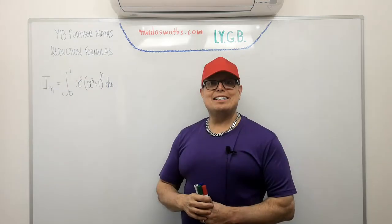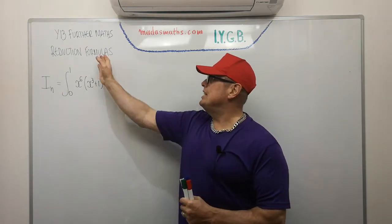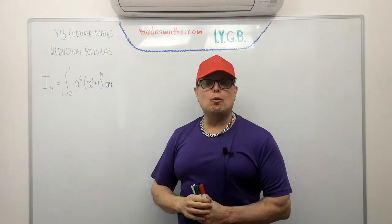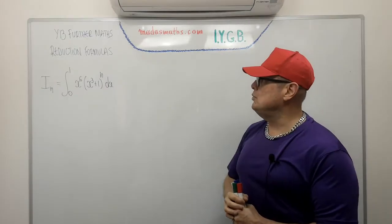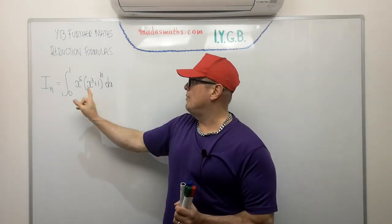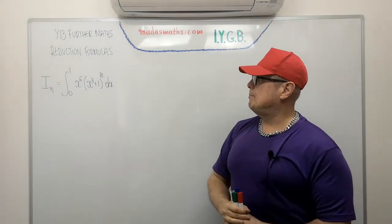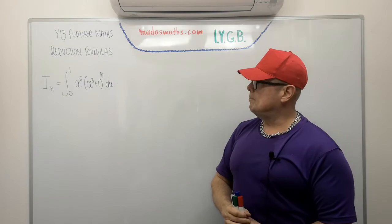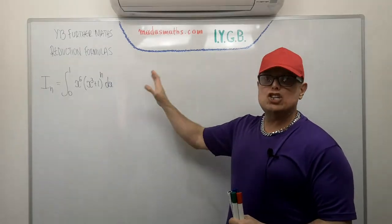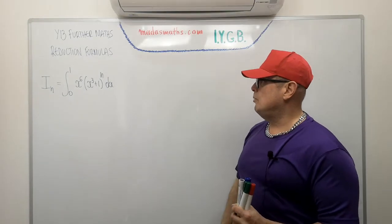Good morning and welcome. Integration for Year 13's Further Maths. It's actually reduction formulas the topic. I'm not quite sure in which module this is now included. This is the reduction formula that we're trying to produce. The integral is integral 0 to 1, x to the sixth bracket x cubed plus 1, all to the power of n dx. It is a show, but unfortunately I forgot to write a show.